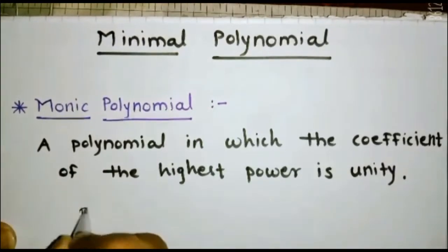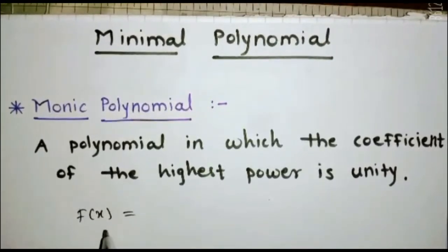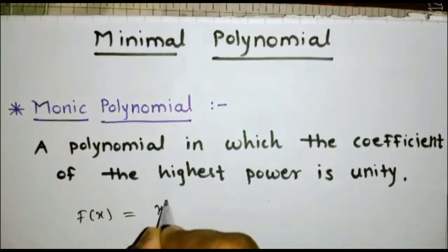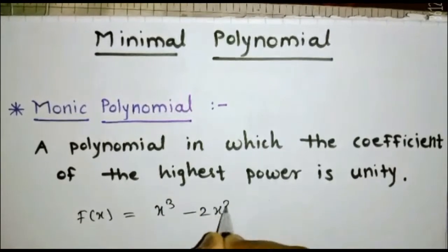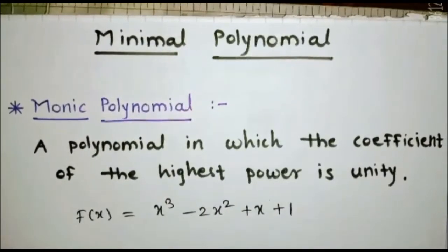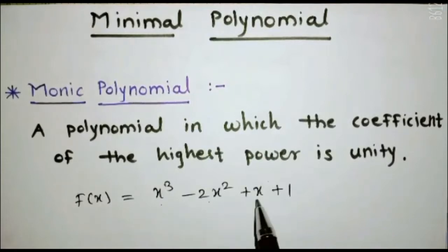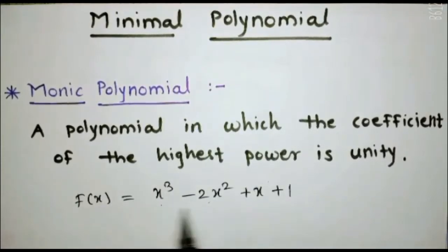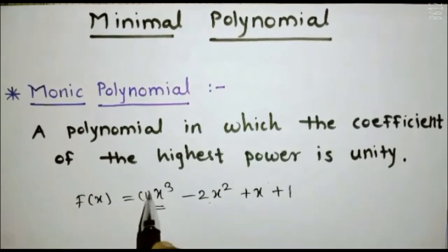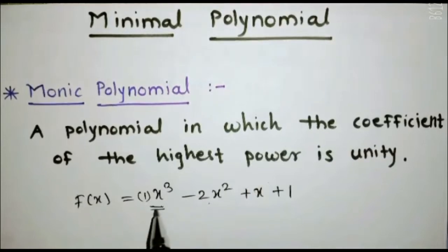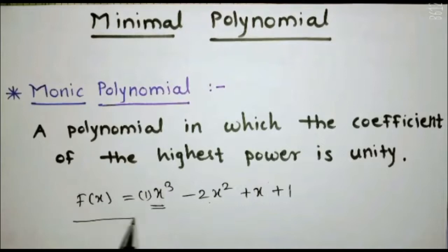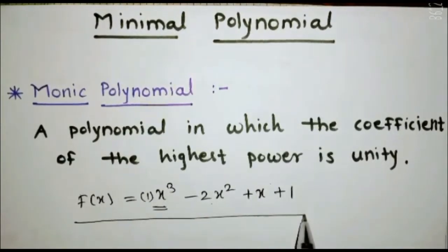Let us see an example. f(x) is a polynomial taken in general: f(x) = x³ − 2x² + x + 1. In that polynomial, the highest power is x³ and its coefficient is 1. That means the highest power x³ has a coefficient of 1. Therefore, this polynomial is a monic polynomial.